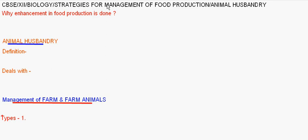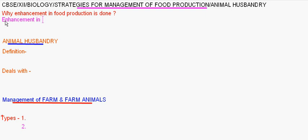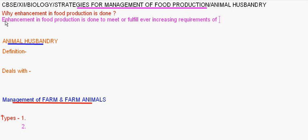We are going to discuss strategies for management of food production, specifically animal husbandry. Enhancement in food production is done to meet or fulfill the ever-increasing requirement of food for an increasing population.